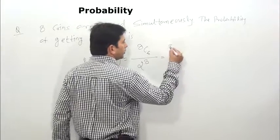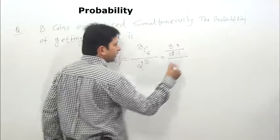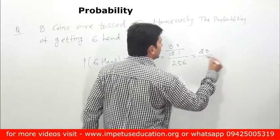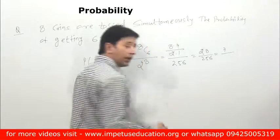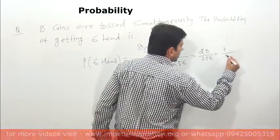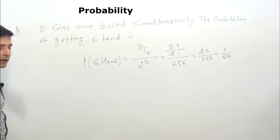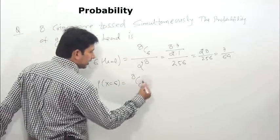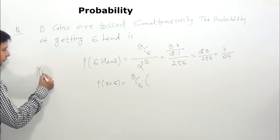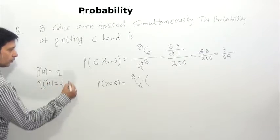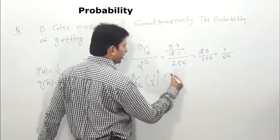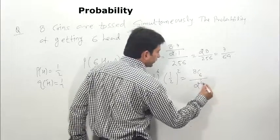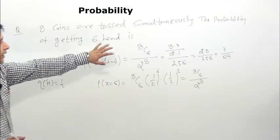With n = 8 and r = 6: P(x = 6) = 8C6 × (1/2)^6 × (1/2)^2 = 8C6 / 2^8. Now 8C6 = 8C2 = (8 × 7) / (2 × 1) = 28, and 2^8 = 256. So the answer is 28/256 = 7/64.